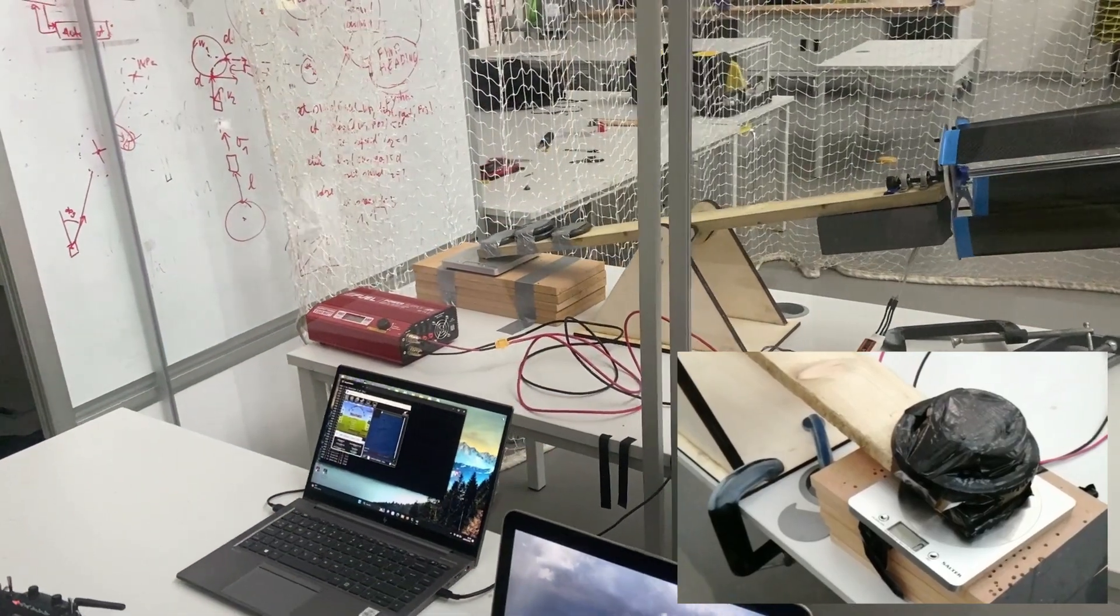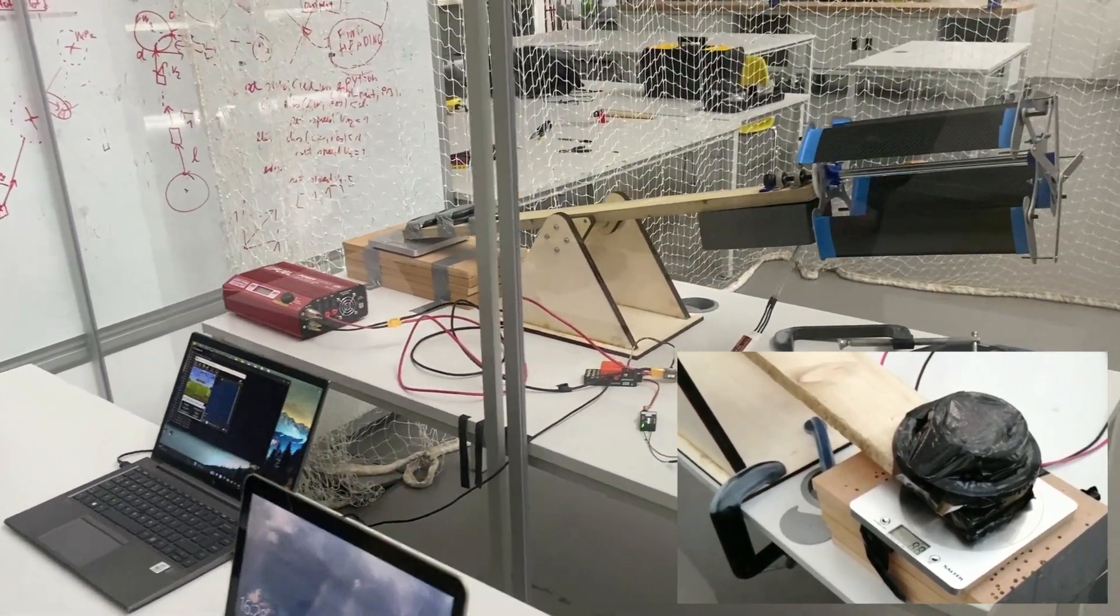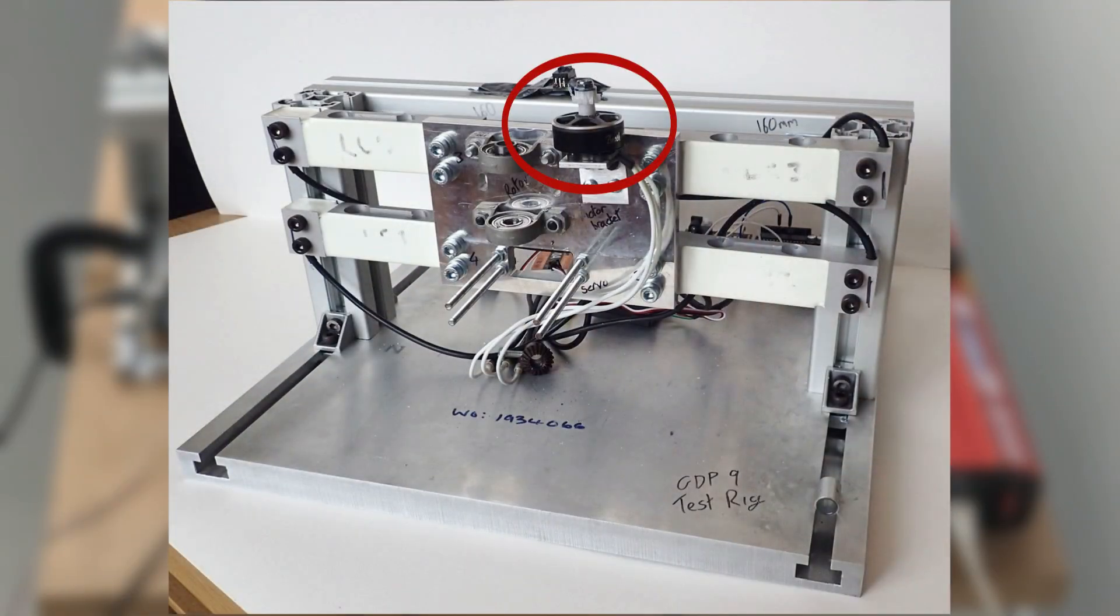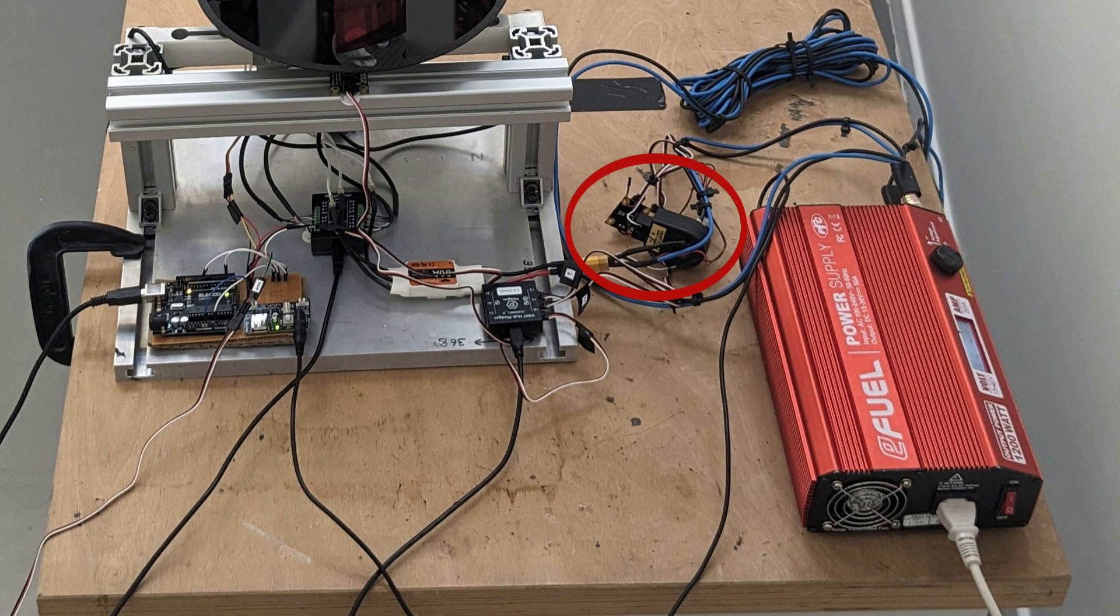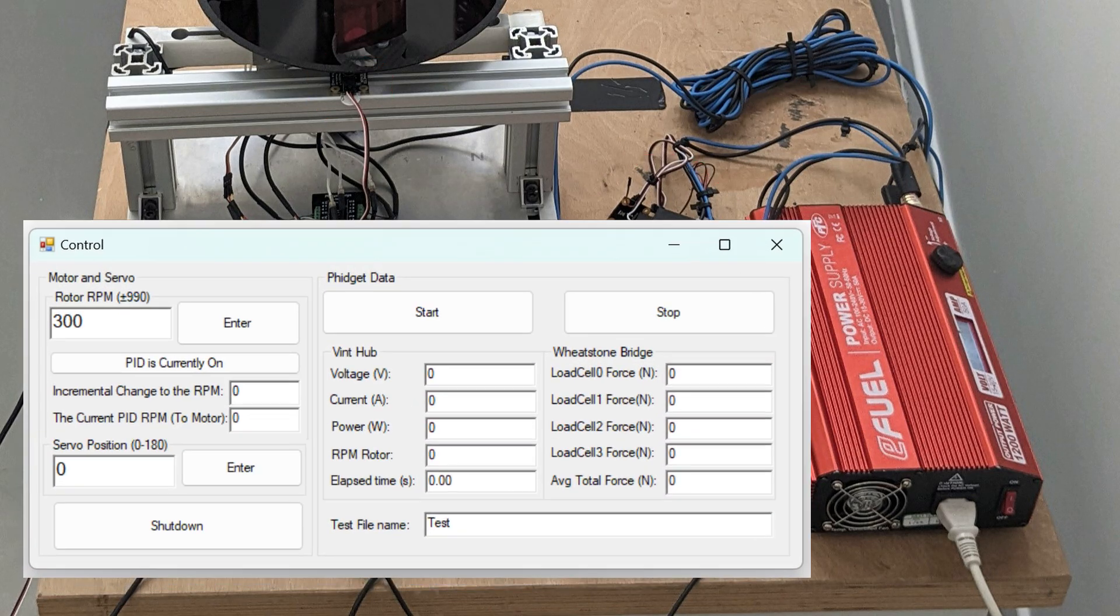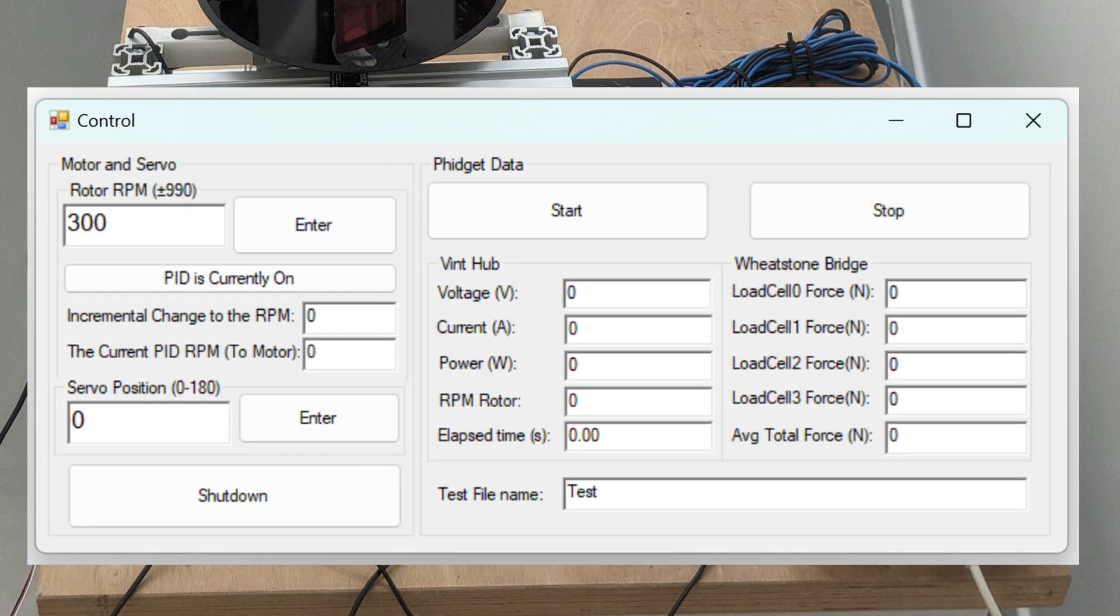We upgraded the previous test rig, making it more robust and capable. By using a motor to control the rotor's RPM, we can measure force and torque through the load cells, as well as power and RPM through a custom-made user interface and are sent off for post-processing.